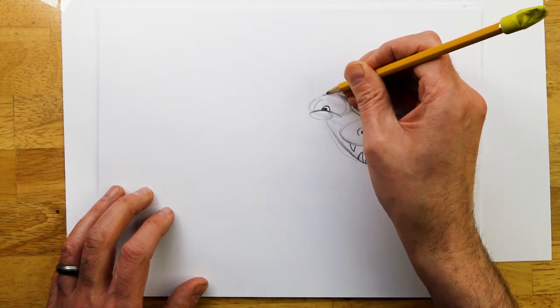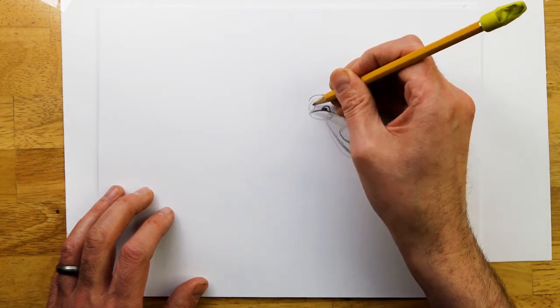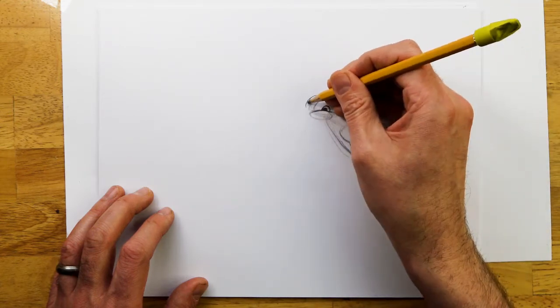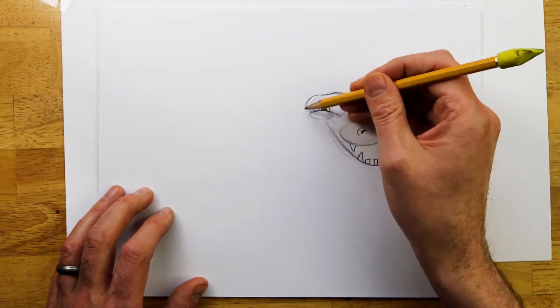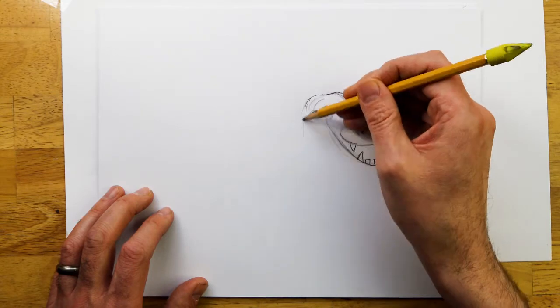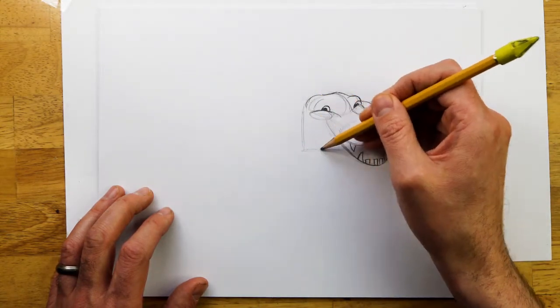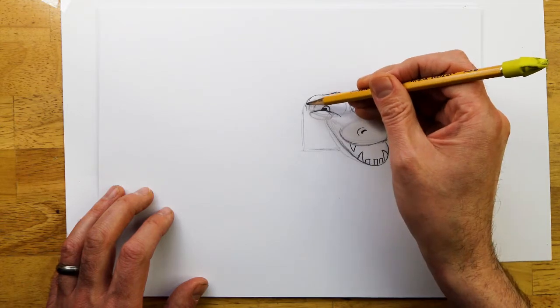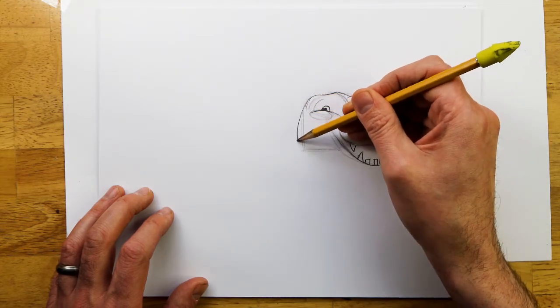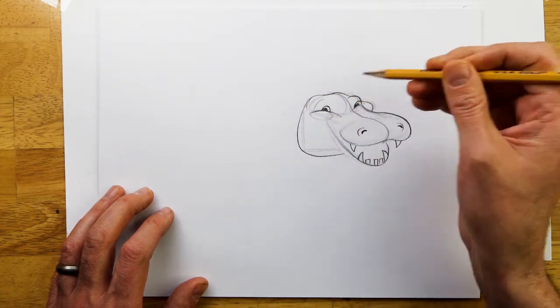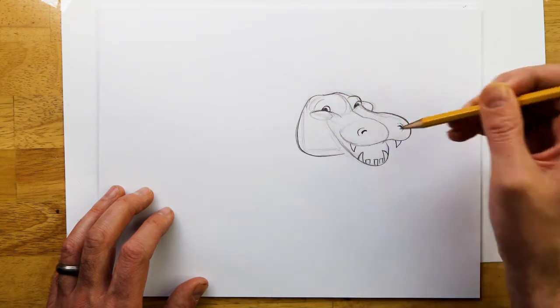And then put an arc over the eyes, just to shape that face. It's going to come up, kind of dip down a little bit, and then back here. And then for the base of the face, it's almost like a square, but we're going to round it out. So we've got the base.